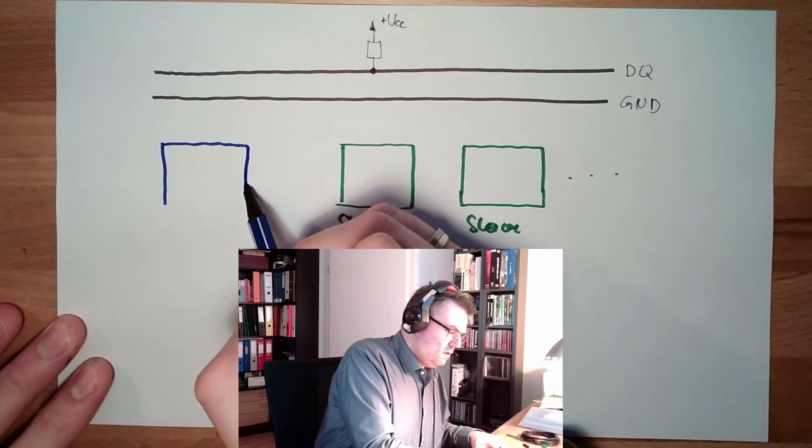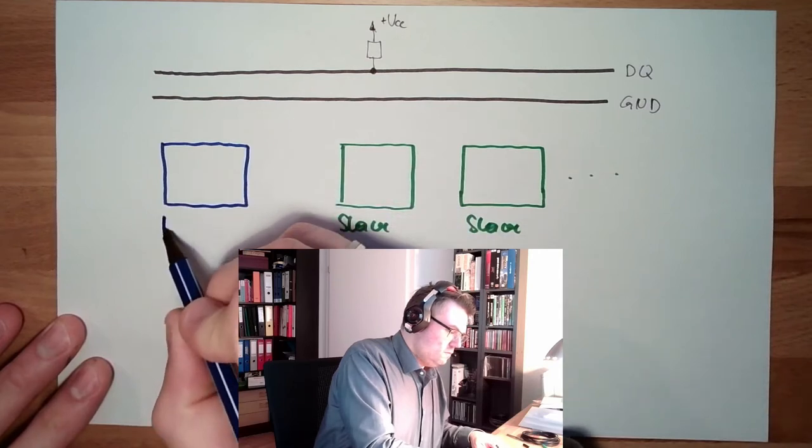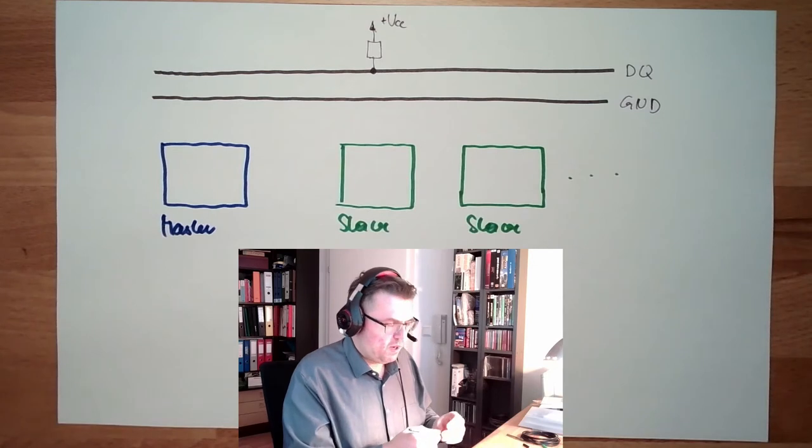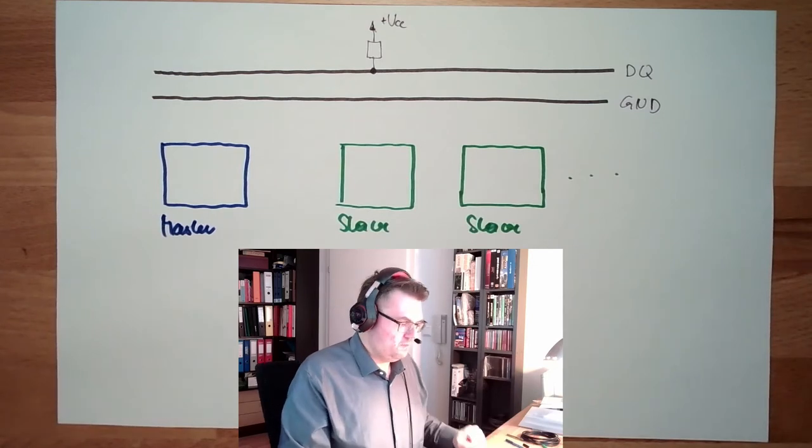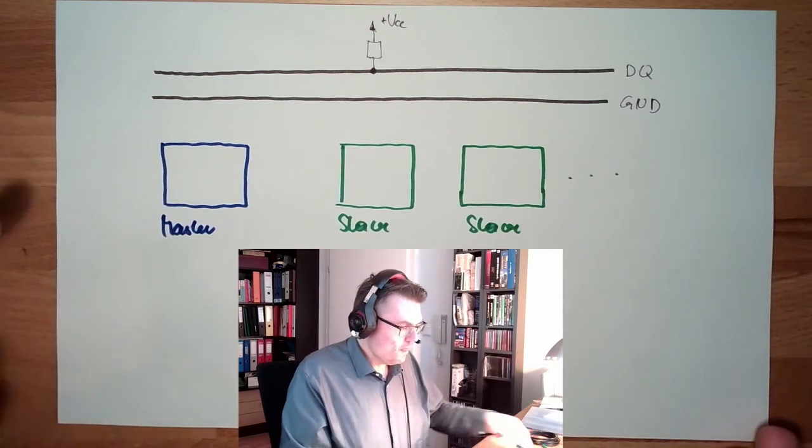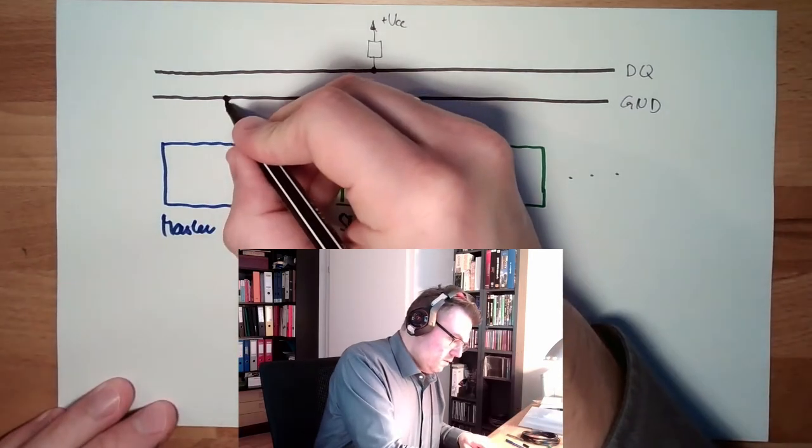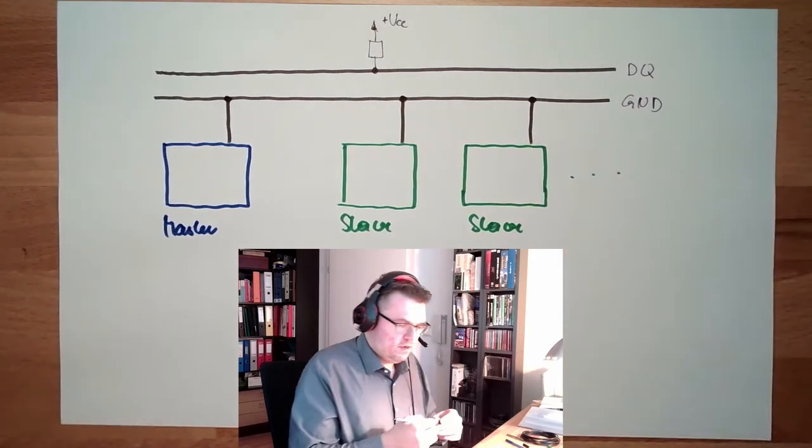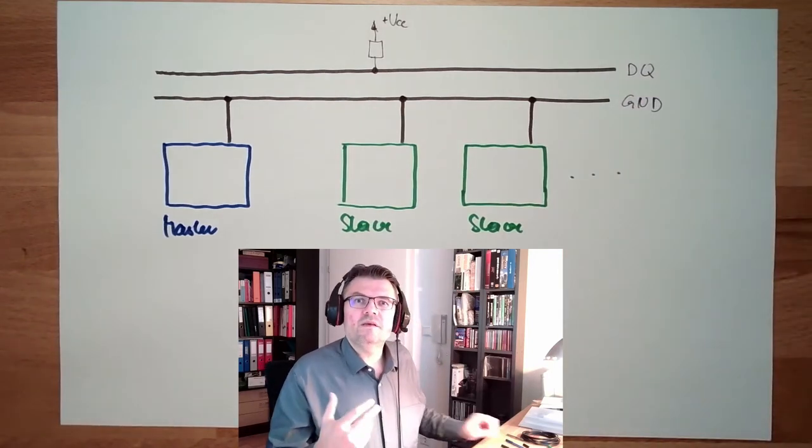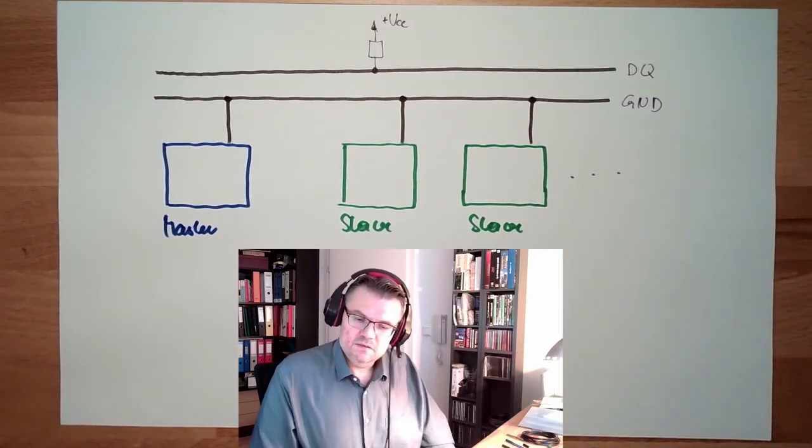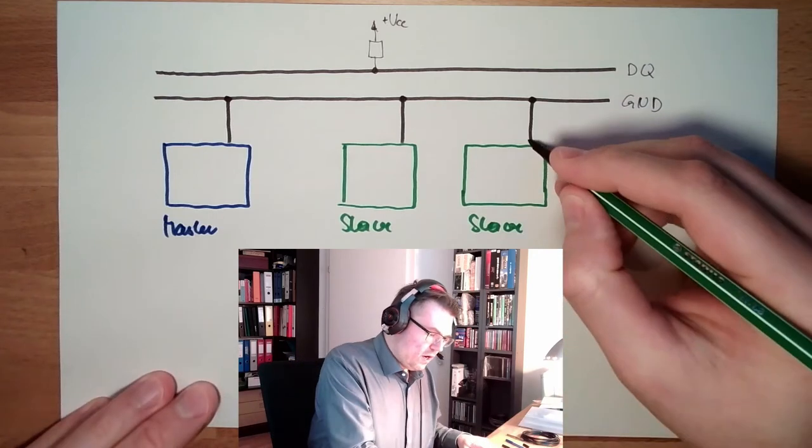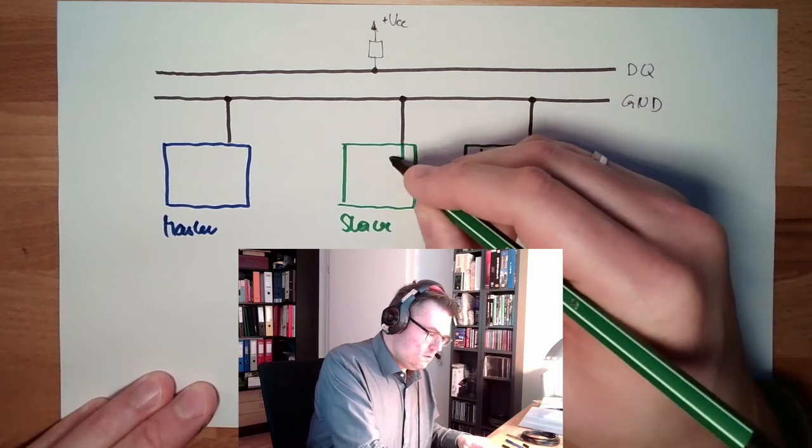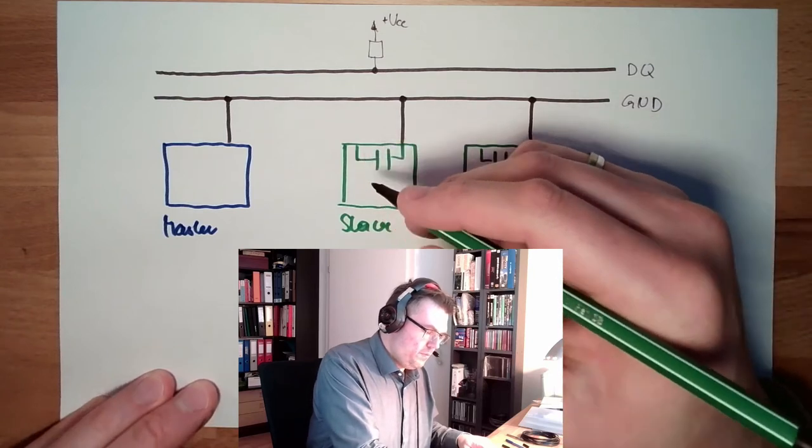It's one master, different slaves in this bus communication. The master is controlling the bus. The ground is connected simply to all of them. And every station, every slave station has a built-in capacitor. So this capacitor here is charged.